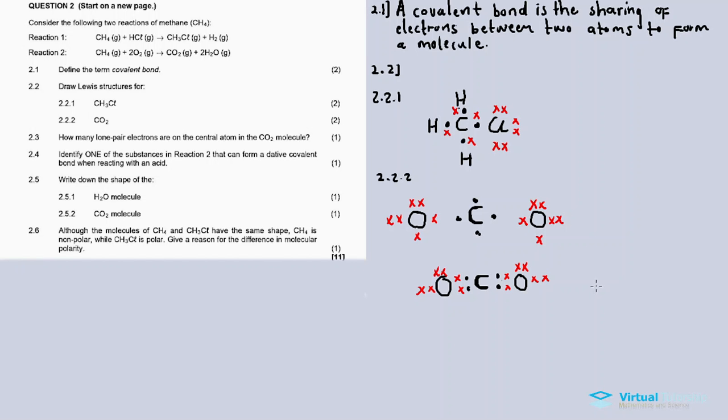2.3 asks how many lone pair electrons are on the central atom in the carbon dioxide molecule. The central atom carbon has no lone pair electrons. Each oxygen has two lone pairs. The carbon doesn't have lone pair electrons since it shares all electrons with the other two oxygen atoms.